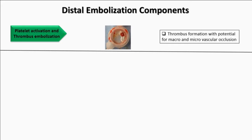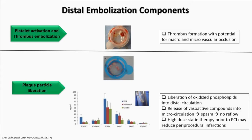The key component of distal embolization is platelet activation and thrombus embolization, which can cause macro and microvascular occlusion. Additionally, when manipulating atherosclerotic plaque, as Dr. Khalili showed us, you can get plaque embolization and lipid particle embolization — oxidized phospholipids that are vasoactive and can cause spasm and no-reflow. This is the rationale for high-dose statin therapy prior to PCI to decrease these periprocedural events.